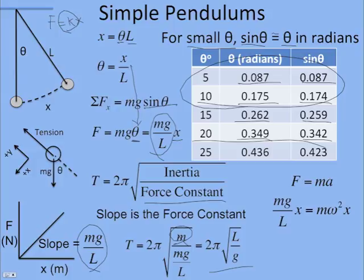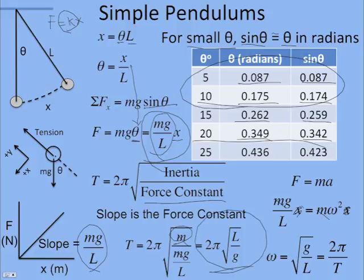You could also use Newton's second law, f equals ma. And so the force is mg over L times x, and so I set that equal to ma, and we know a is omega squared x, so the x's cancel, mass cancels, and I get omega squared equals g over L. We also know that's 2π over the period, solve for the period, you get the same thing. And so you can solve for it two different ways.